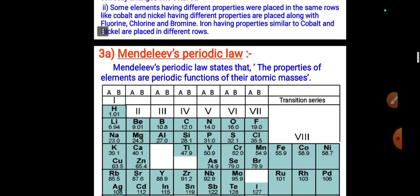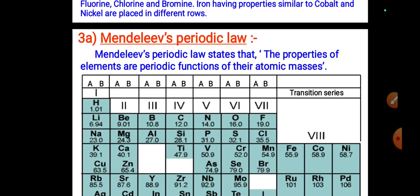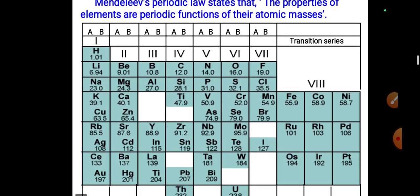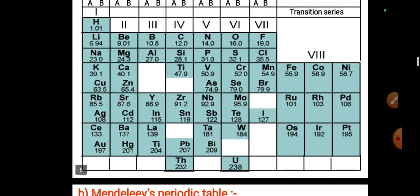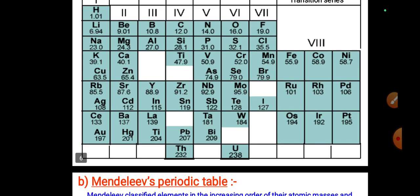Mendeleev's Periodic Law states that the properties of elements are periodic functions of their atomic masses. This is the basis of Mendeleev's periodic table.